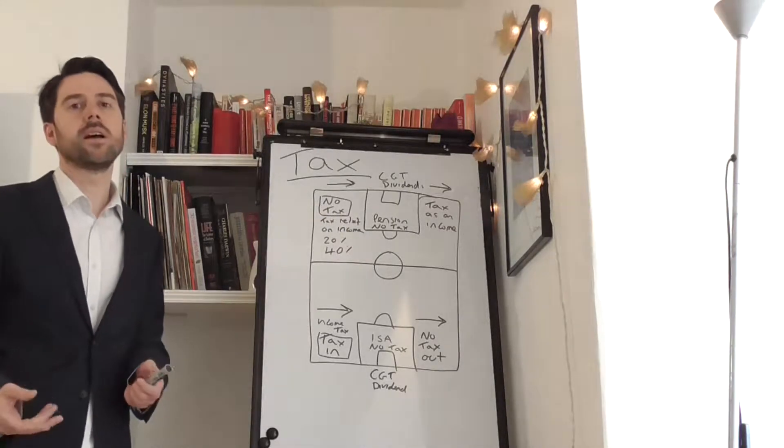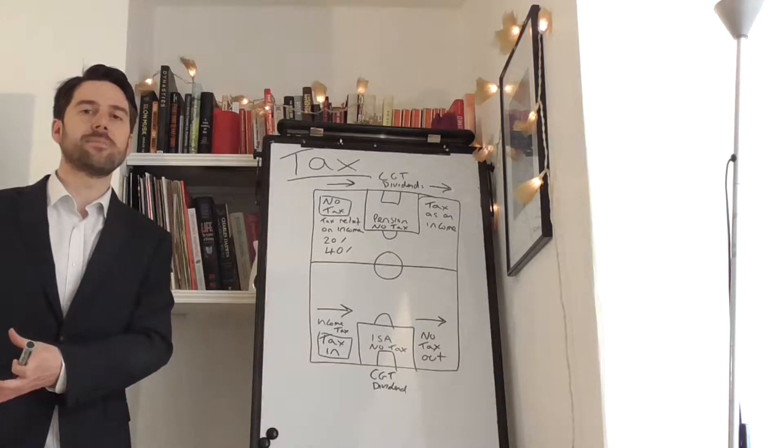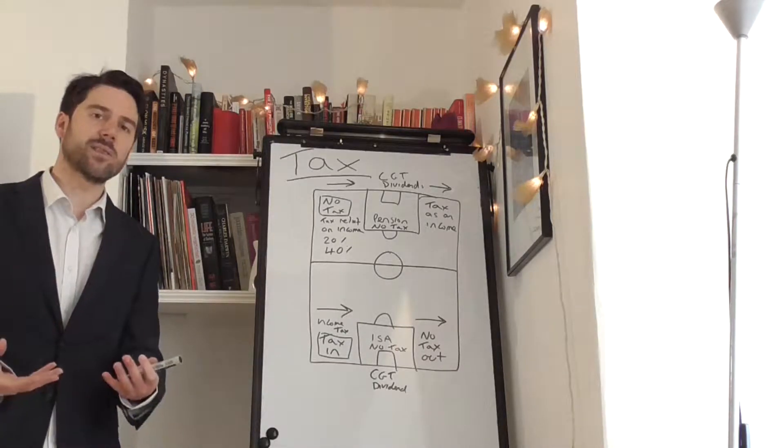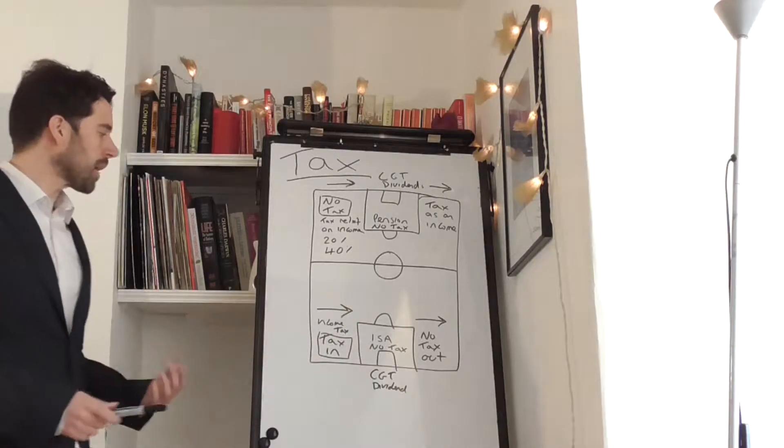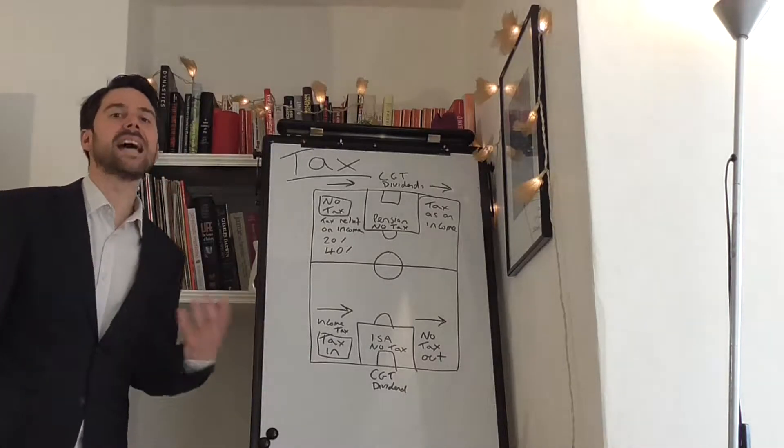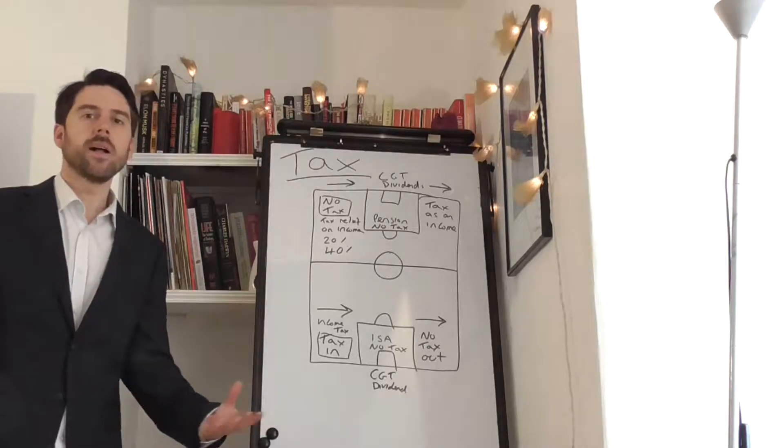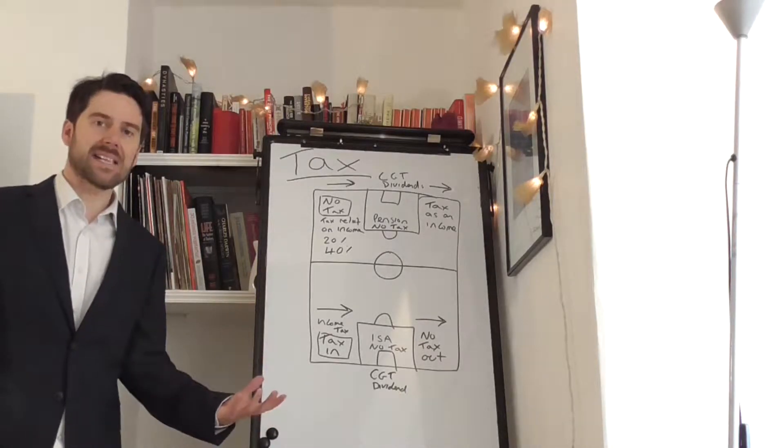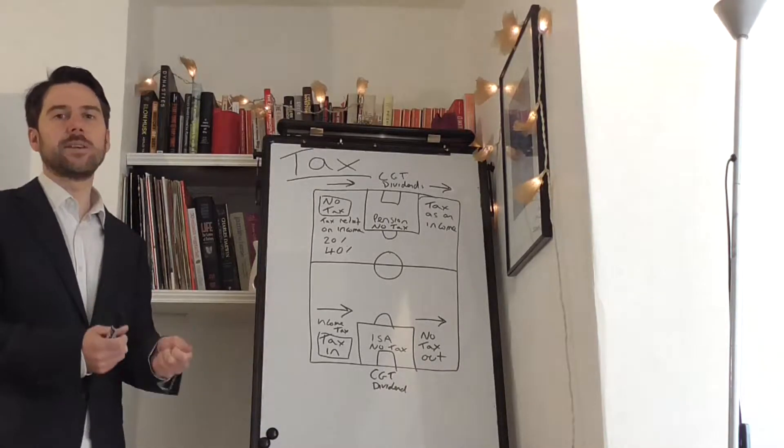An ISA doesn't get capital gains tax, and you don't get dividend tax. When a share produces profits, they produce a dividend that's given back to the shareholder. You're taxed on that amount if it's outside of this box essentially. With an ISA, on the way in it is taxed. You work at a job, you get paid income tax on that job.